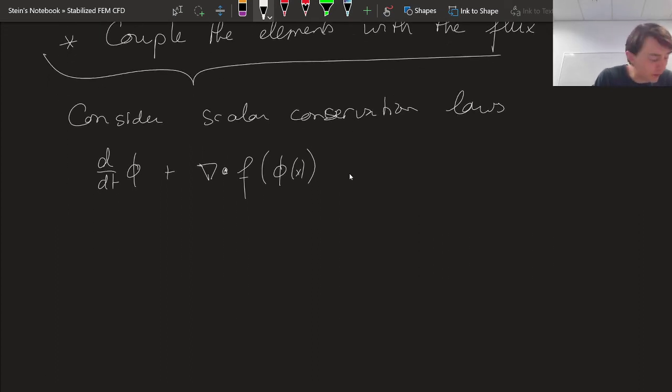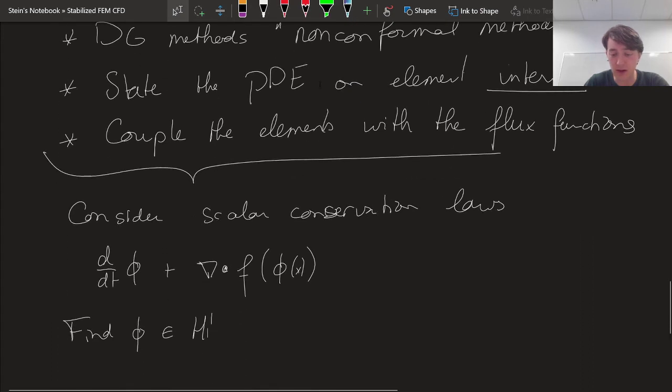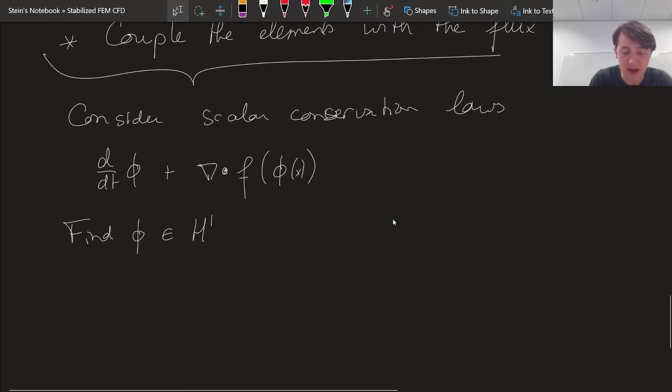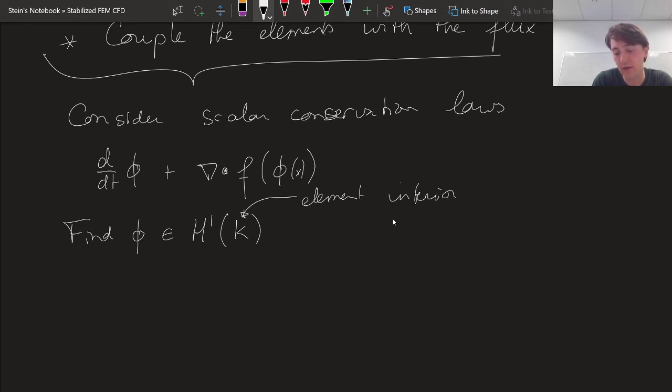Then what we're going to do is say find that state function phi in H1. But wait, we're not allowed to do that, other than only inside of the element. So I'm going to say find this guy inside the element, H1 of k, the element interior domain, such that